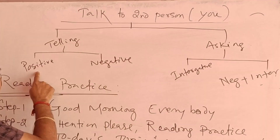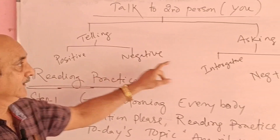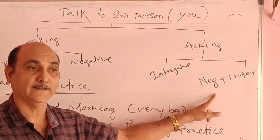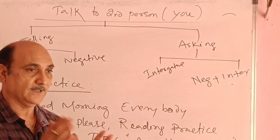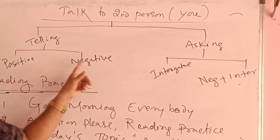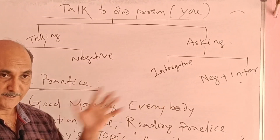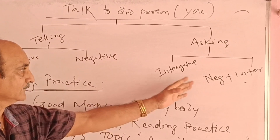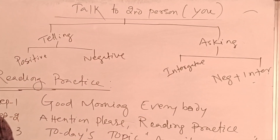Telling involves positive and negative speech, and asking involves two things: interrogative and negative-interrogative portions. We have already completed positive and negative telling and interrogative asking. Now this round is all about negative-interrogative reading practice.